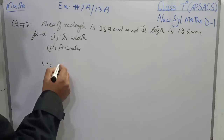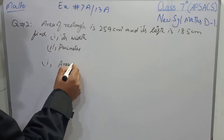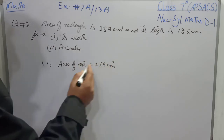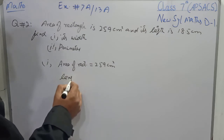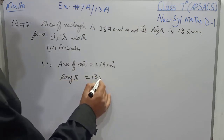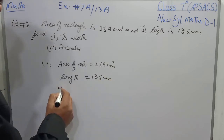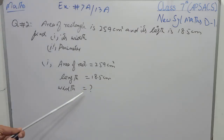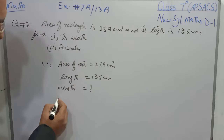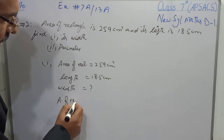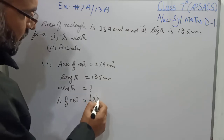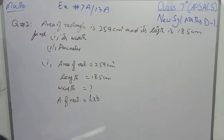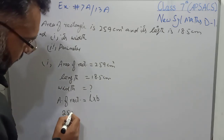First part: area of a rectangle is equal to 259 cm², its length is 18.5 cm, and width we have to find. Width is equal to — we have to find the width. We will apply the formula: area of a rectangle is equal to length multiplied by breadth or width. Area of a rectangle is given, that is 259 cm², so I will write 259.